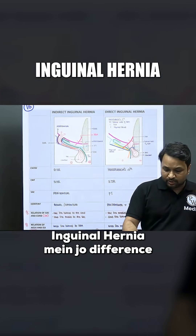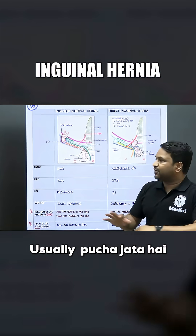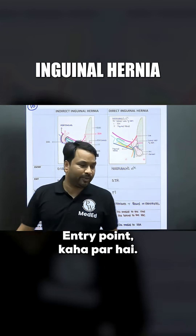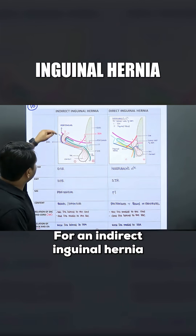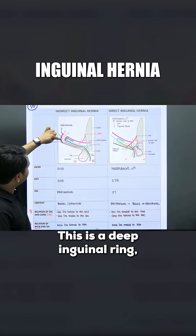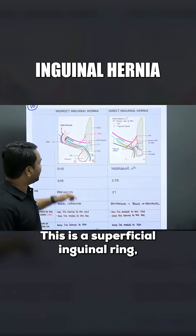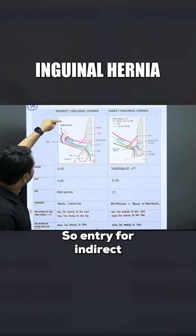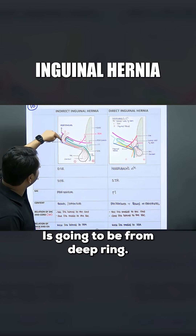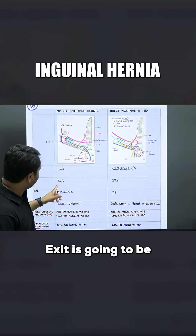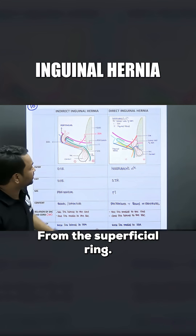Direct or indirect inguinal hernia mein jo difference usually puchhata hai — entry point kaha pe hai. For indirect inguinal hernia, this is your deep inguinal ring, this is your superficial inguinal ring. Entry for indirect is going to be from the deep ring, exit is going to be from the superficial ring.